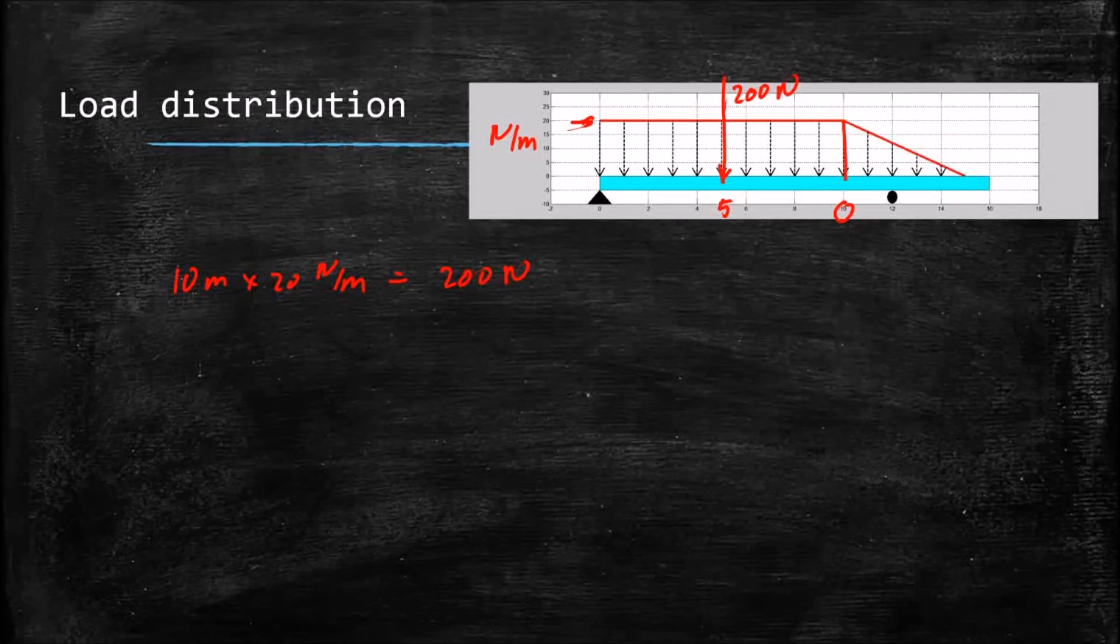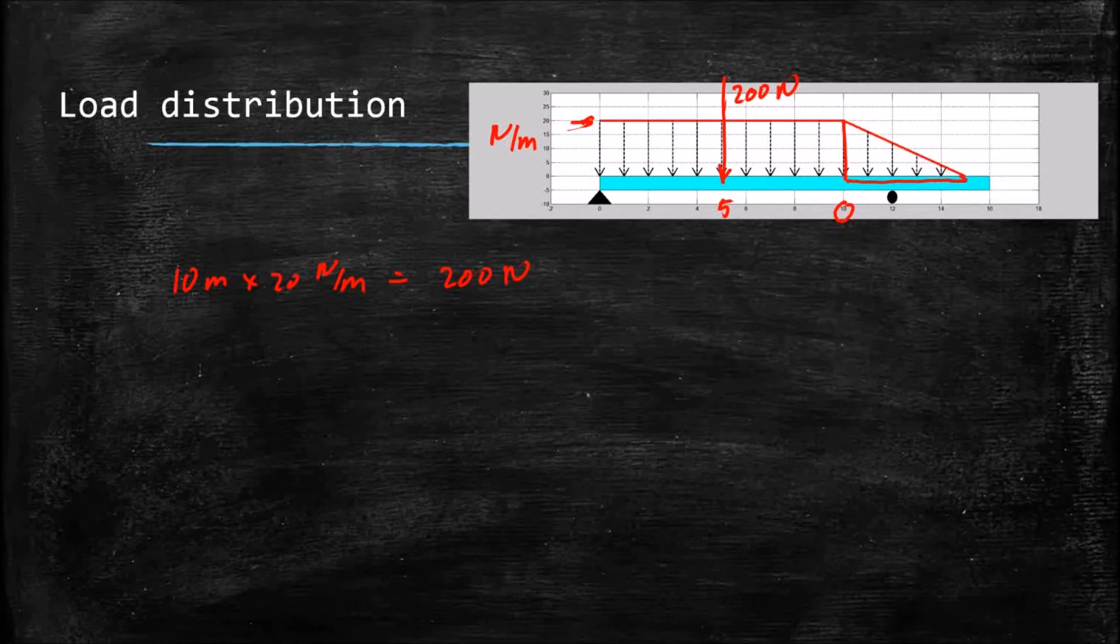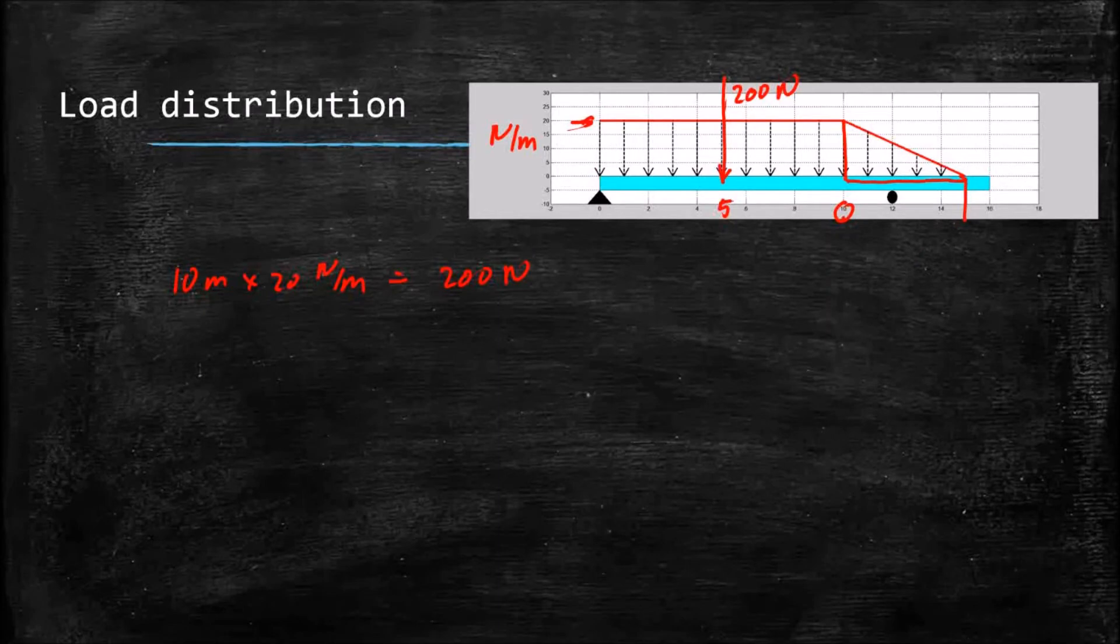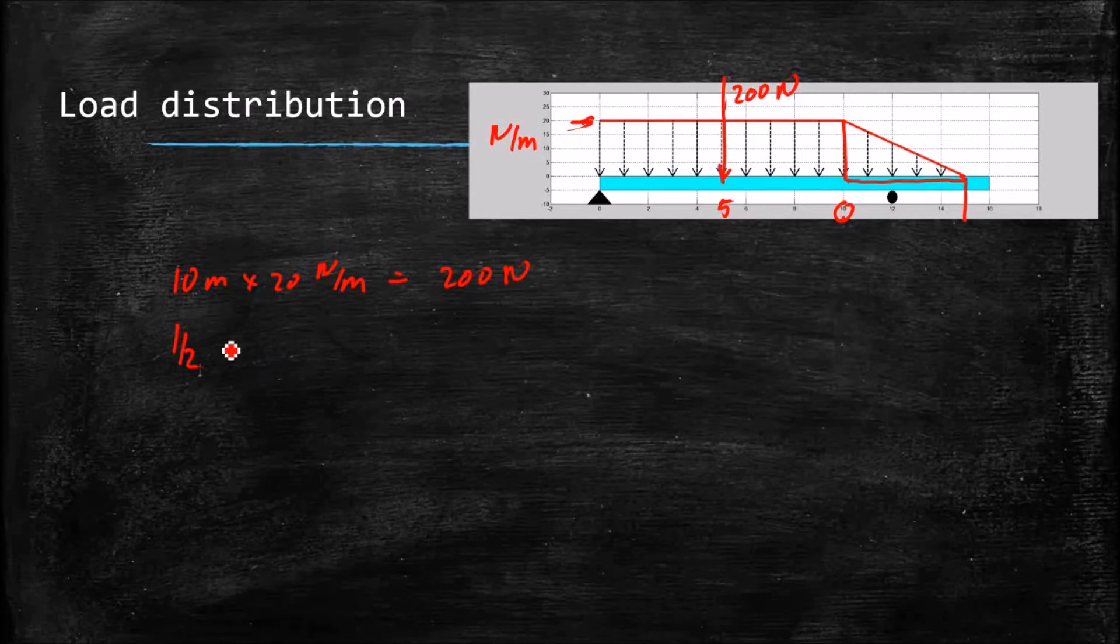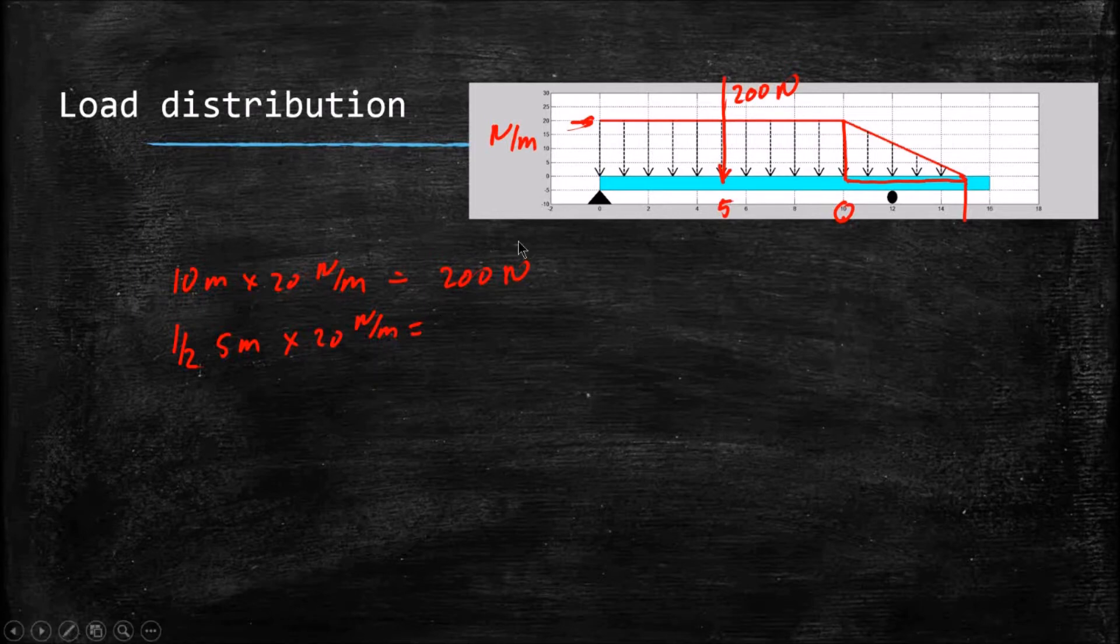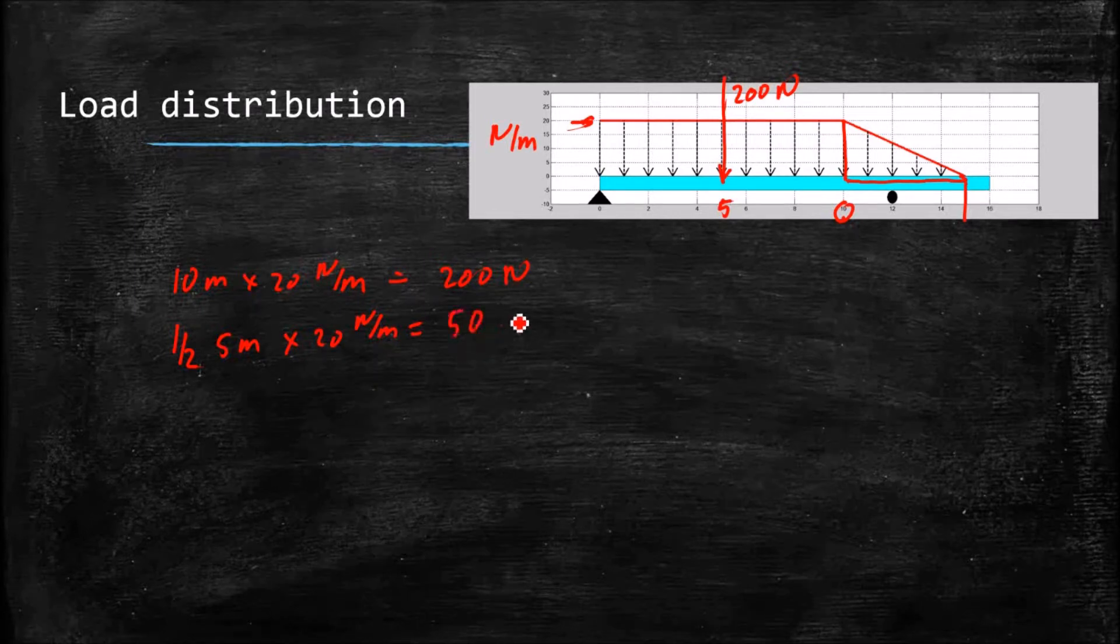Now we can look at the triangle. That's not a lot more difficult. Our height of the triangle is, again, 20 newtons per meter. The base of our triangle is, the difference between 10 and 15 is 5, so the area of a triangle is one-half our base, which is 5 meters, times our height, which is 20 newtons per meter. And that gives us a total force of 50 newtons.